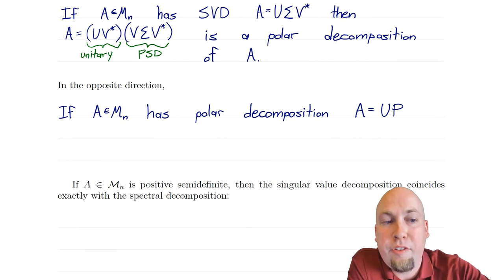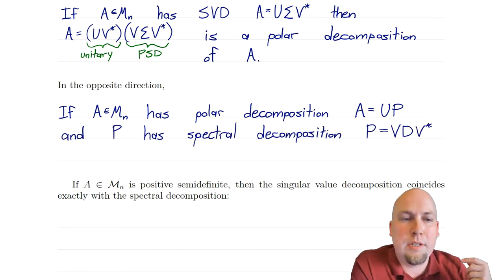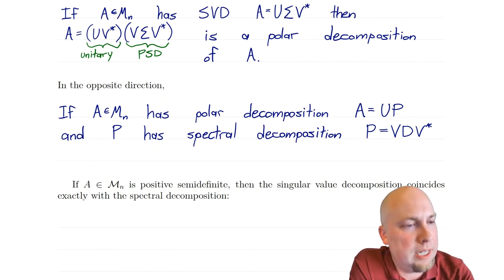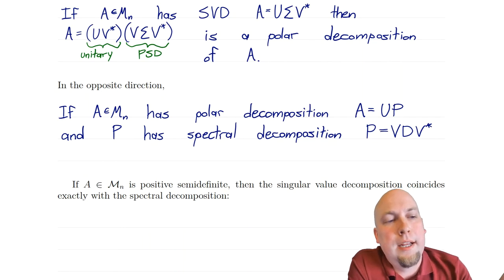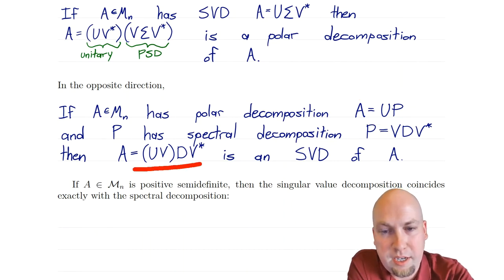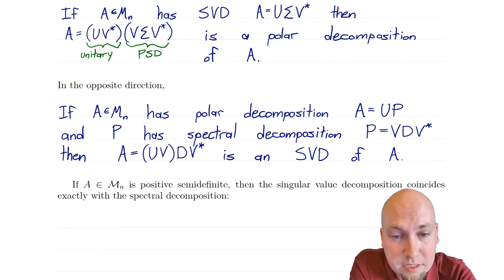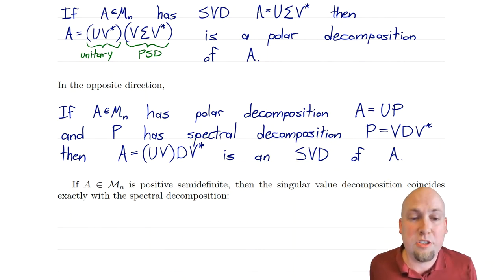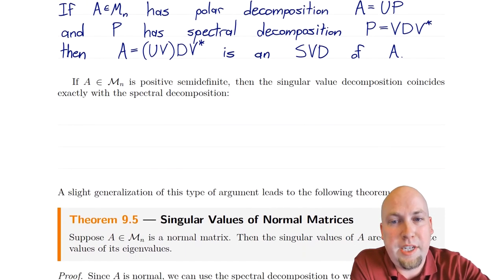You can also go the other way: if you have a polar decomposition A = UP where U is unitary and P is positive semi-definite, then construct a spectral decomposition of P as VDV*. Plug that in and you get A = U(VDV*). Now look carefully at that — you've got a unitary times a diagonal matrix with positive diagonal entries times a unitary star. That is exactly what a singular value decomposition looks like. So you can go from a polar decomposition to a singular value decomposition as well.